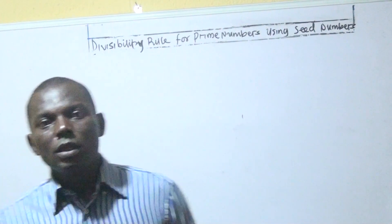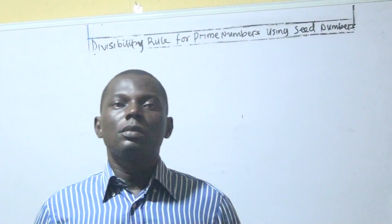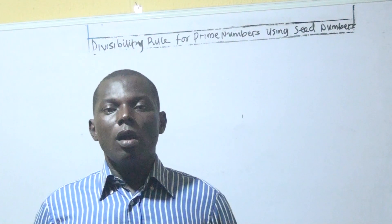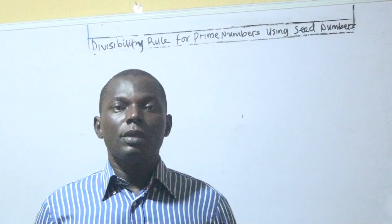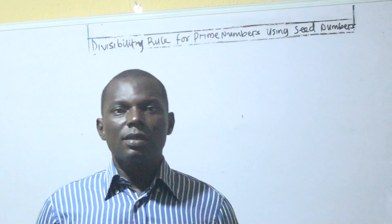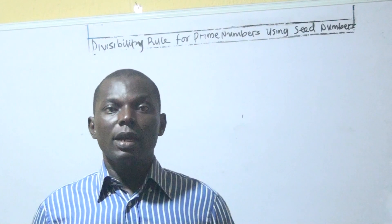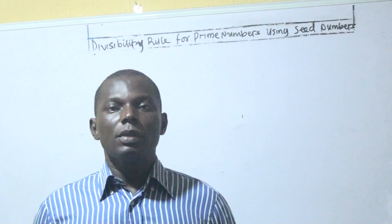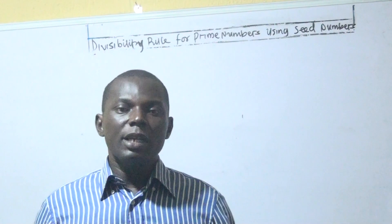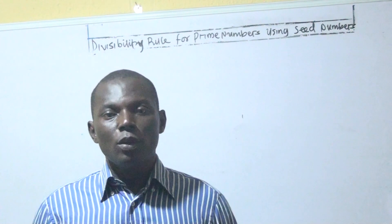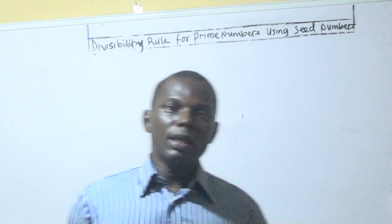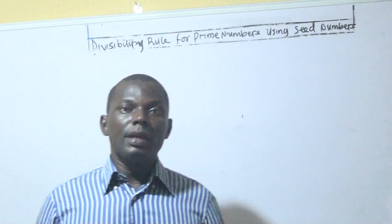Hello. Once again, we're going to look at Divisibility Rules for 13, 17, and 19. In the previous class, we established rules for 3, 7, and 11. And in this class, we'll continue from where we stopped. Here, we established the seed numbers that are necessary to test for the Divisibility Rules for 13, 17, and 19 using the seed concepts.